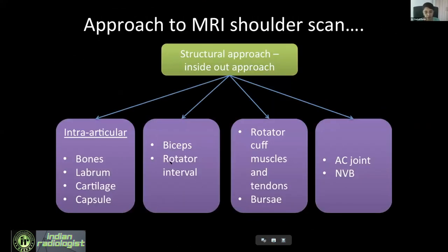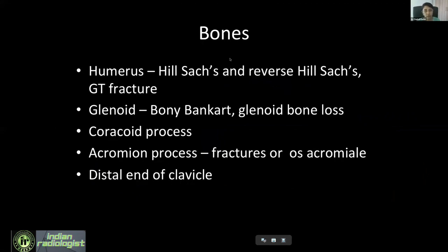For approaching an MRI shoulder scan, always have a systematic approach for any joint you report. I use the structural approach — going structure by structure — and within that I use the inside-out approach, looking at the innermost structures first and gradually making my way outwards. First I look at intra-articular structures: bone, labrum, cartilage, and capsule, followed by biceps and rotator interval. Then going further out, the rotator cuff muscles and tendons and the bursae. Last, I look at the AC joint and neurovascular bundles. I will discuss the practical points important when looking at the scan.